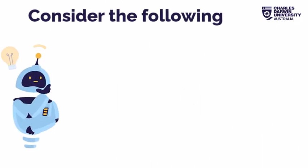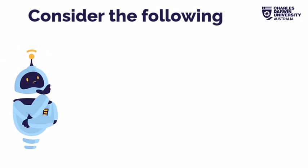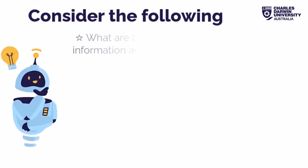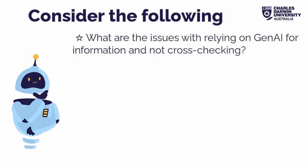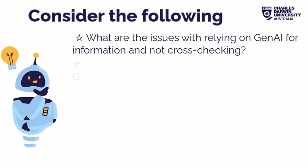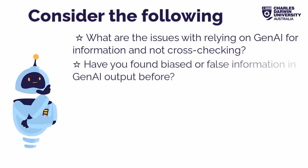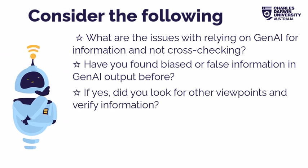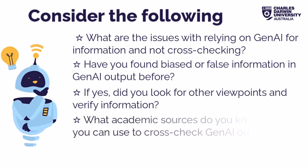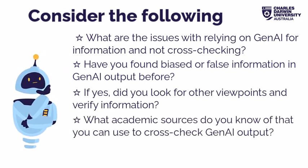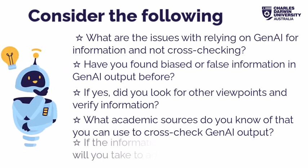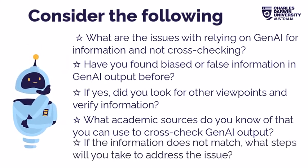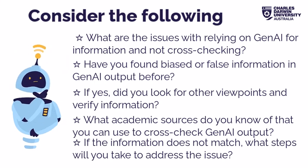Consider your own learning and reflect on these questions. What are the issues with relying on Gen AI for information and not cross-checking with reliable sources? Have you found biased or false information in Gen AI output before? If yes, did you look for other viewpoints and verify the information? What academic sources do you know of that you can use to cross-check Gen AI output? If the information does not match, what steps will you take to address the issue?